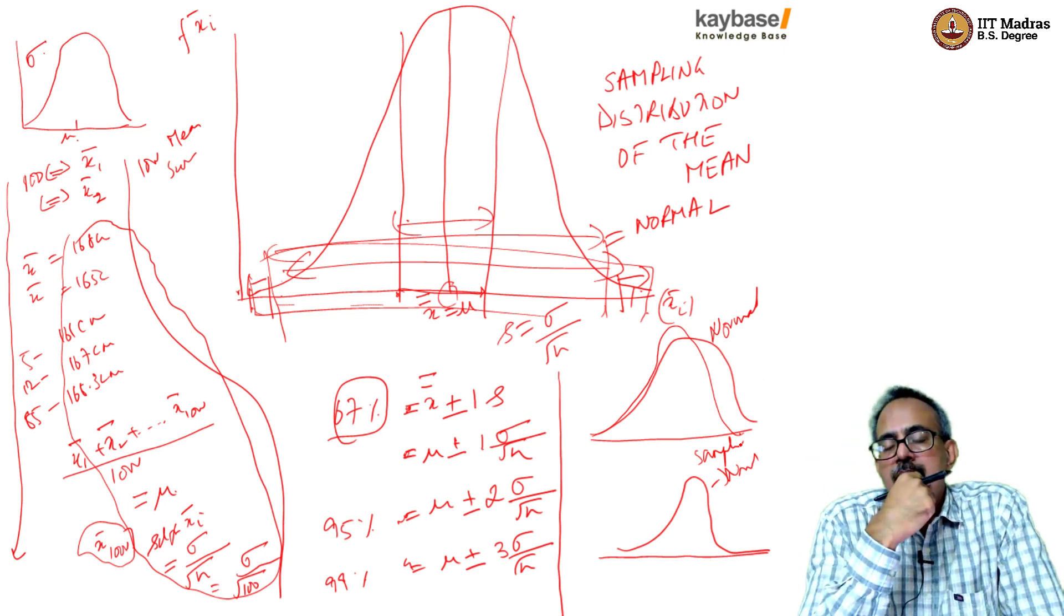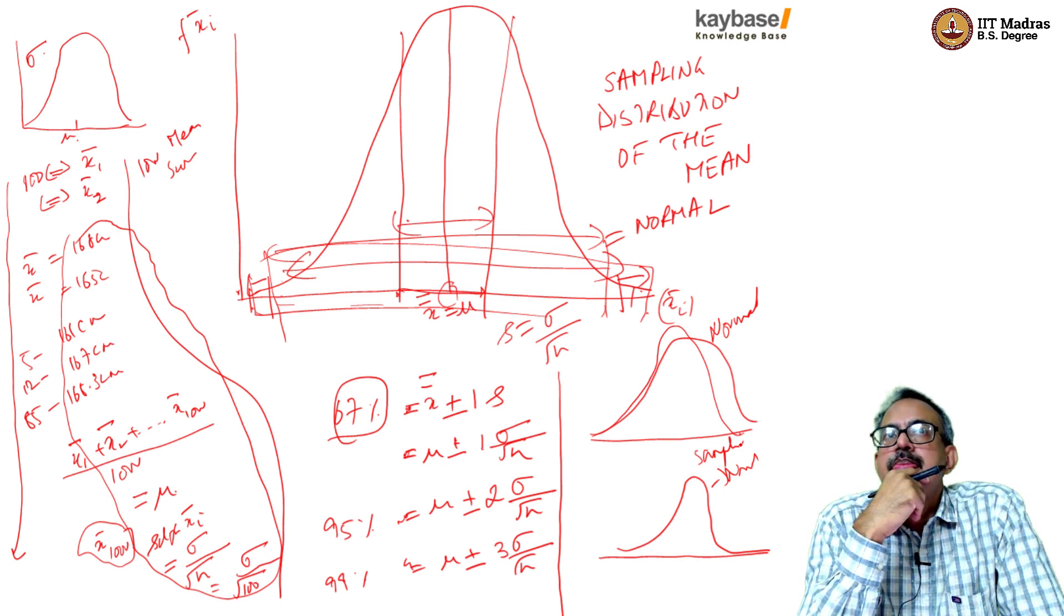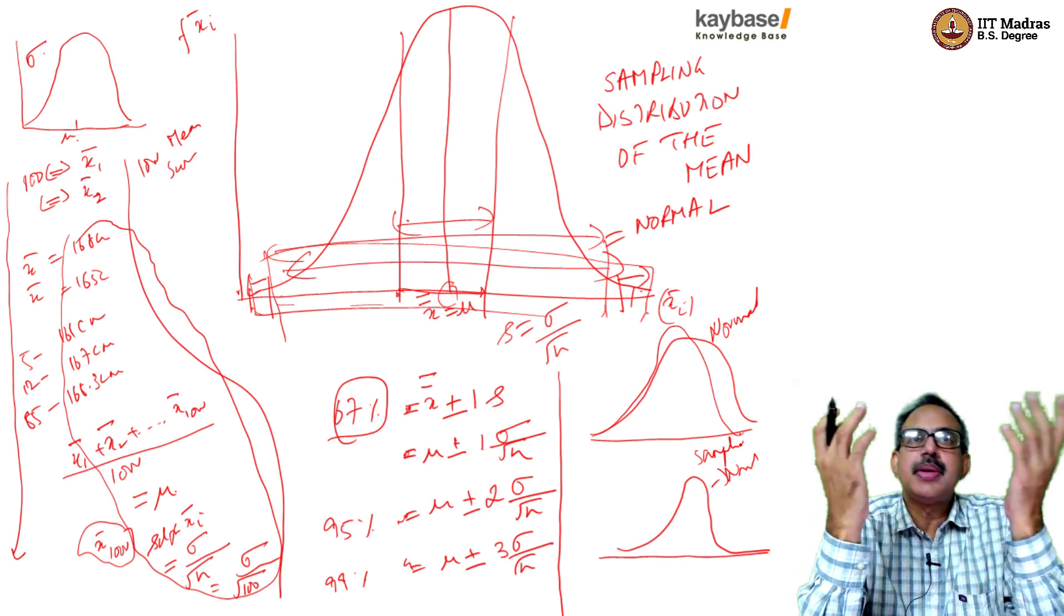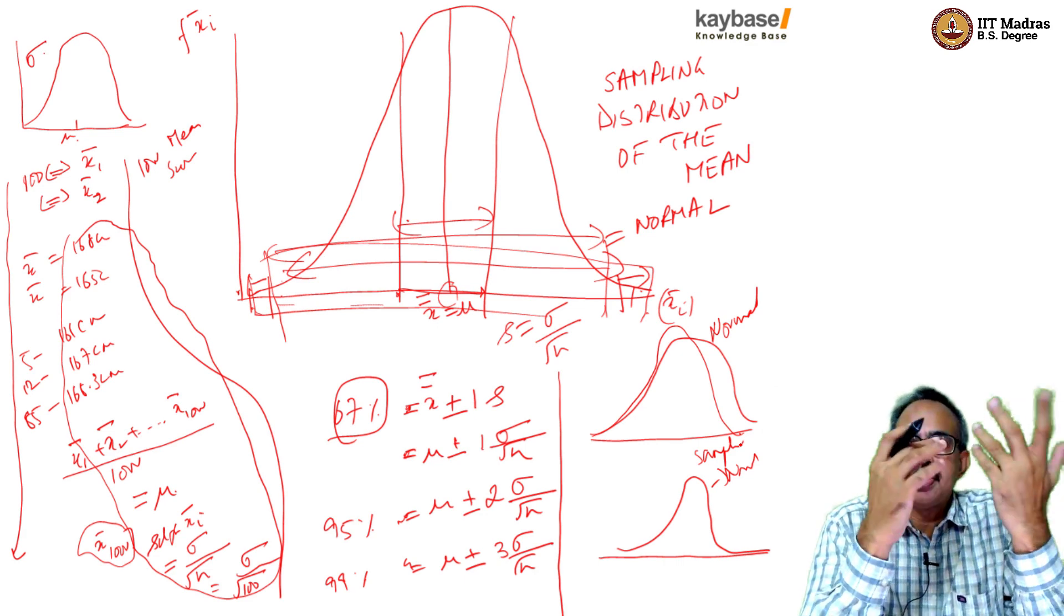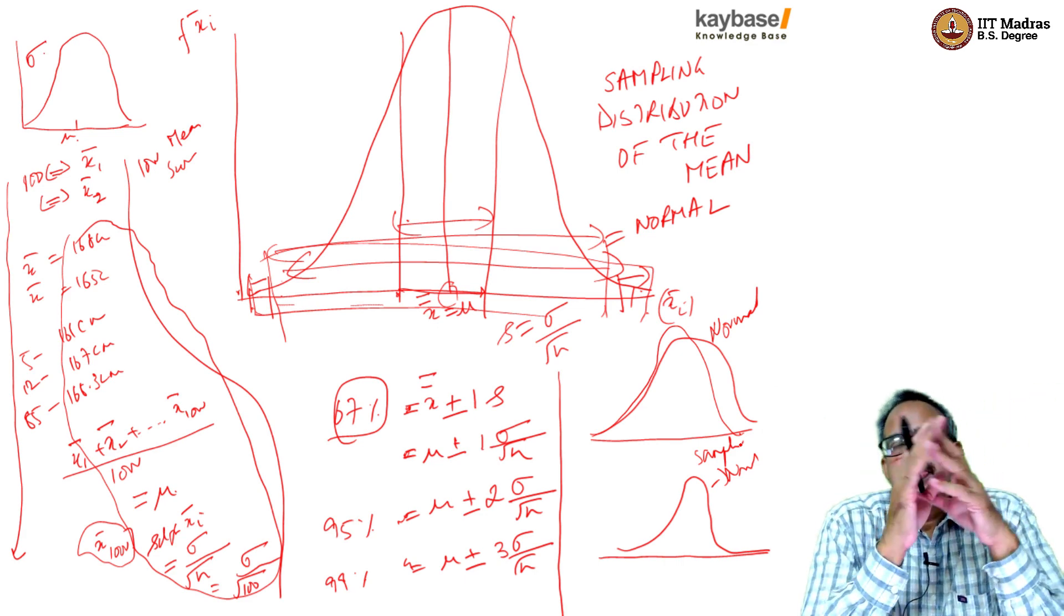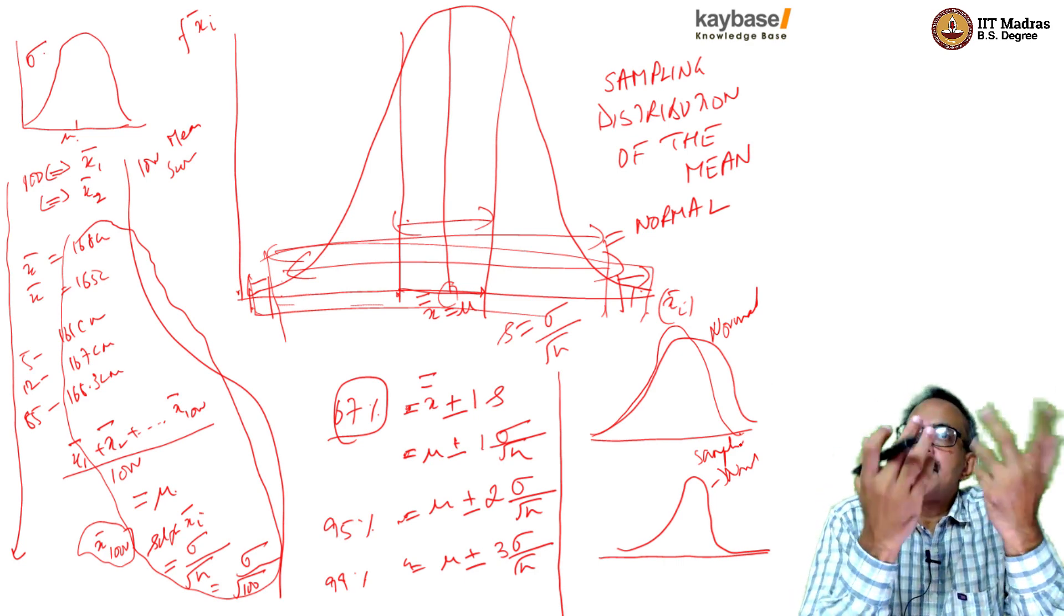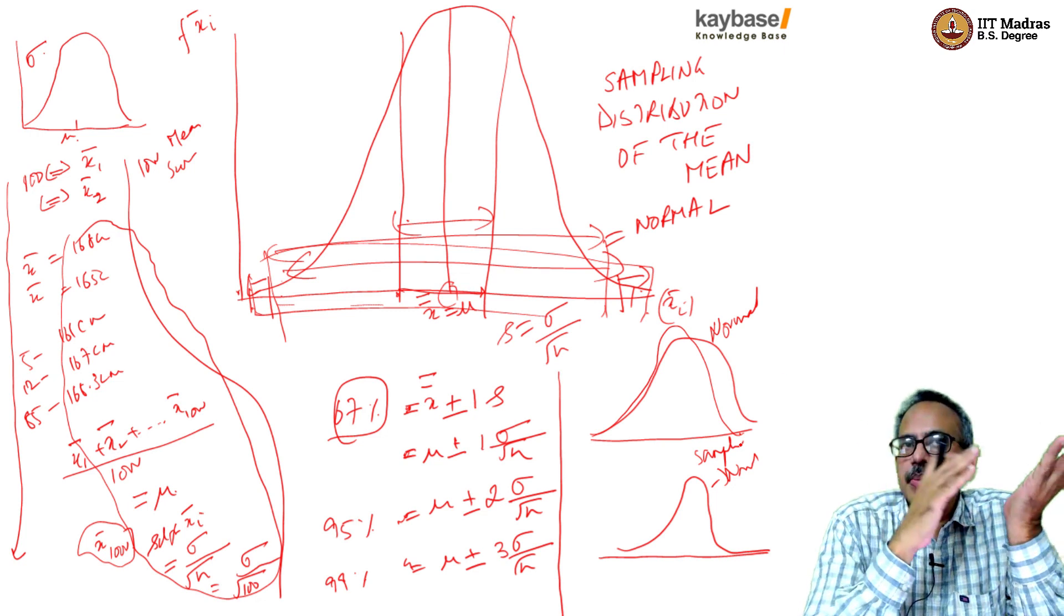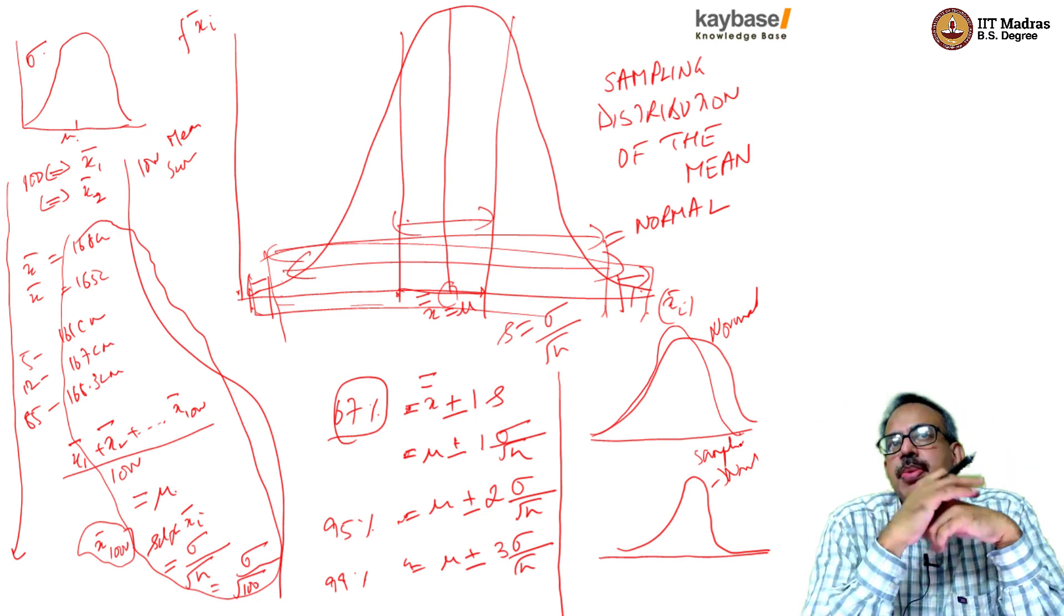But we also said that if we talk about perceptions about a brand, it won't be normal because brand marketers are trying to influence perception by communication. So when we take a sample survey, we are trying to measure things like brand perceptions. So if the population data is not normally distributed, then how does this principle apply?